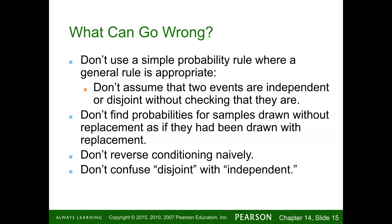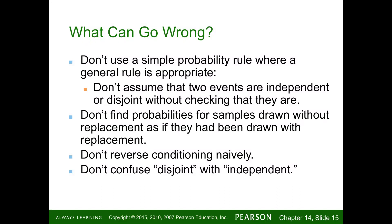Don't find probabilities for samples drawn without replacement as if they were drawn with replacement. For example, the probability of getting four of a kind when dealt cards — they're not replacing the cards. You'll be surprised how much the probability changes with versus without replacement. Don't reverse conditioning naively, and don't confuse disjoint with independent.